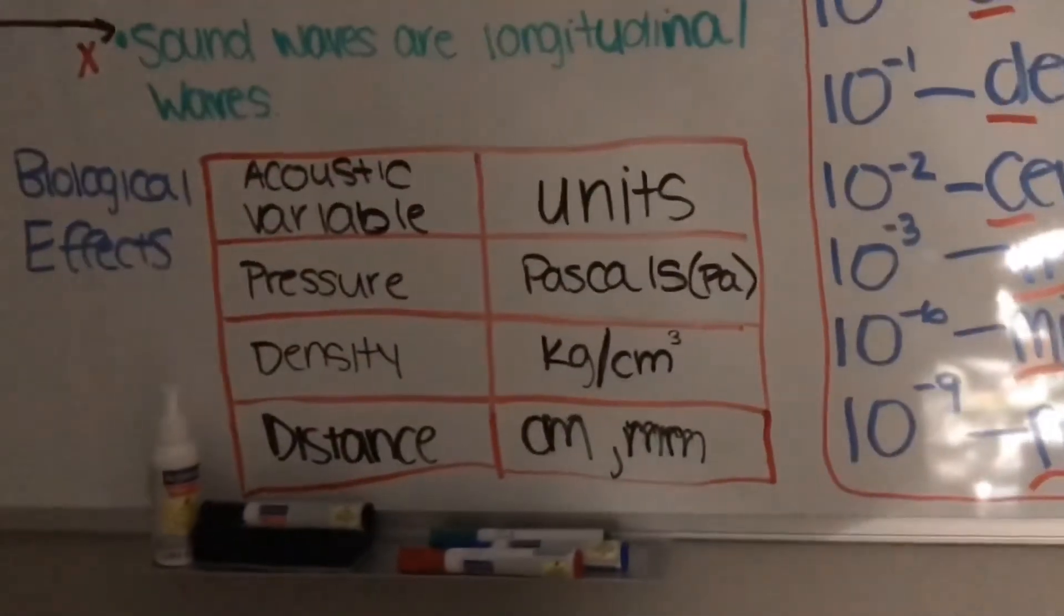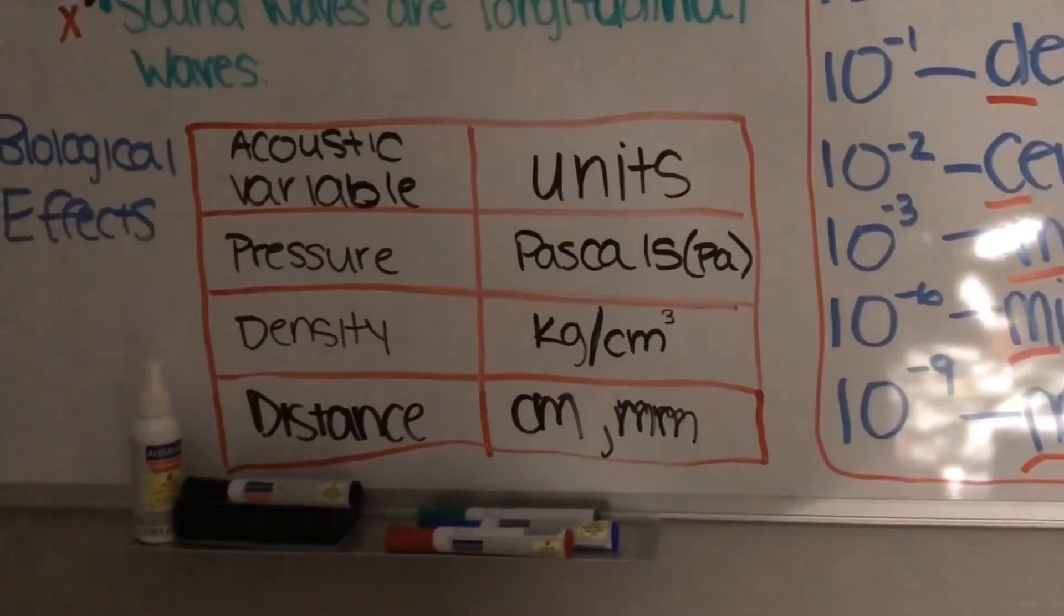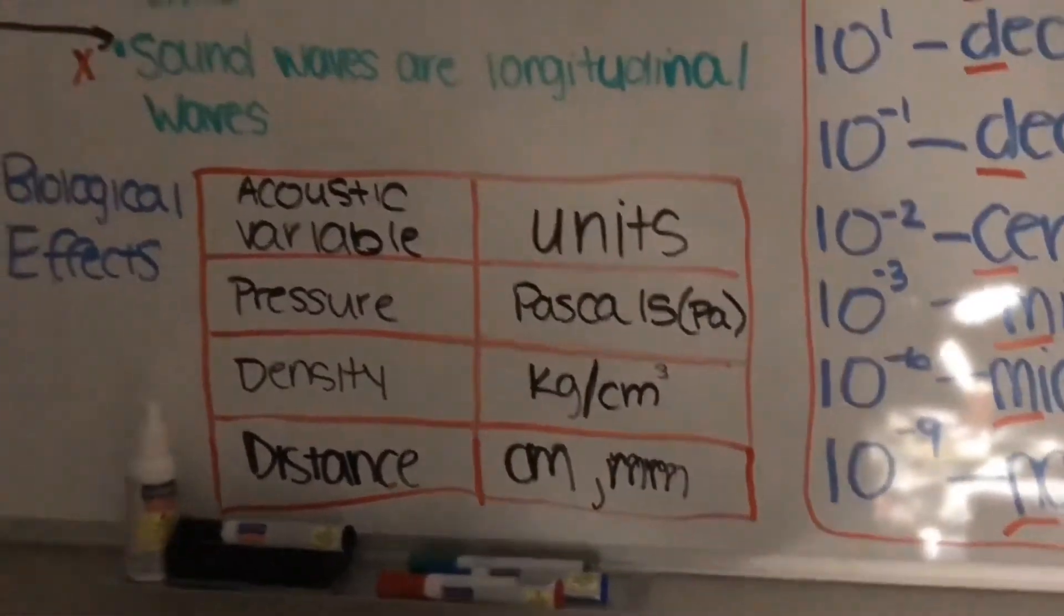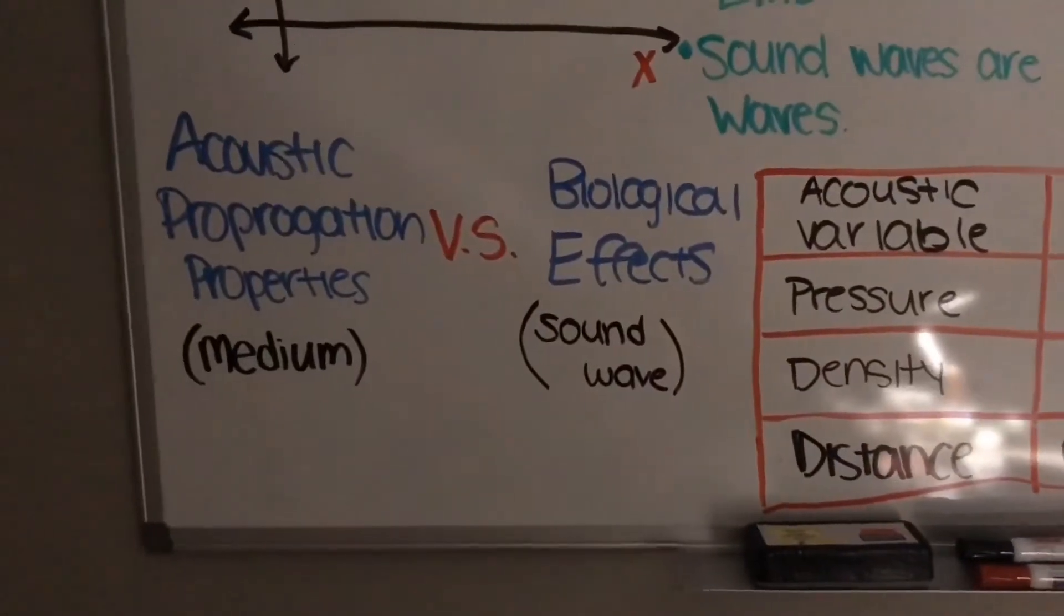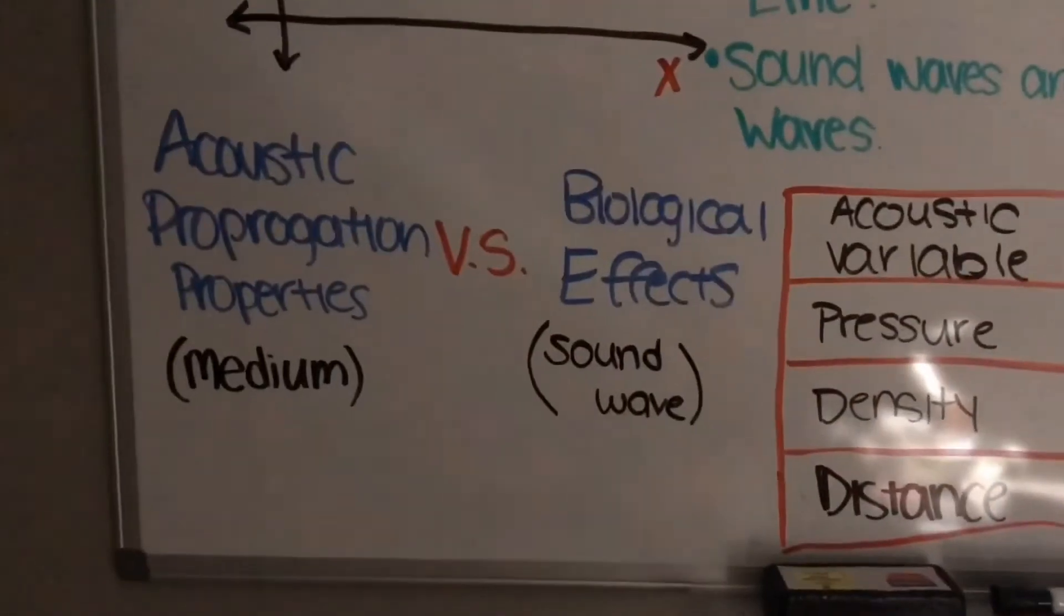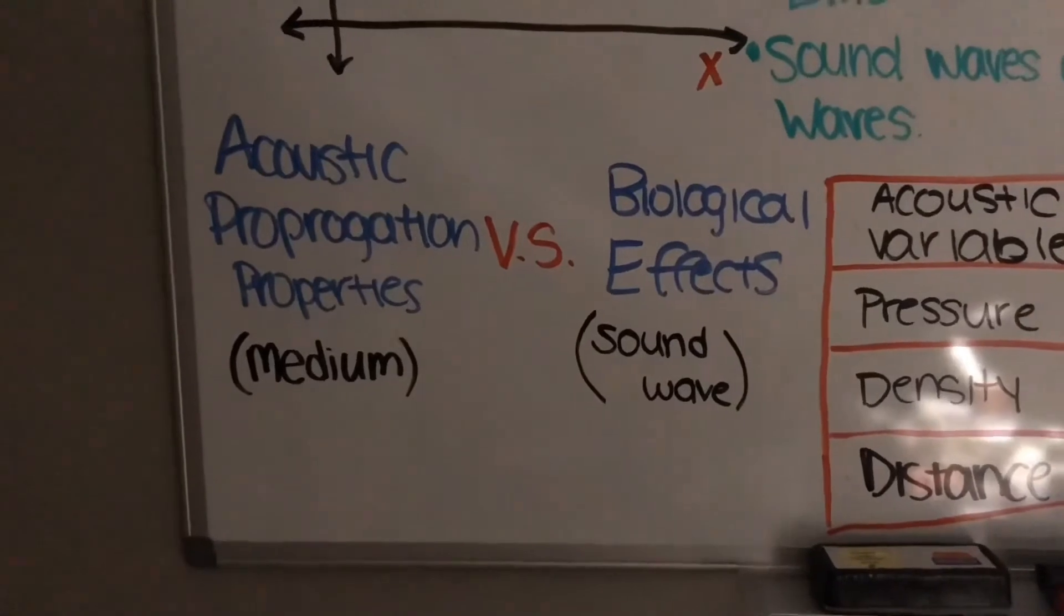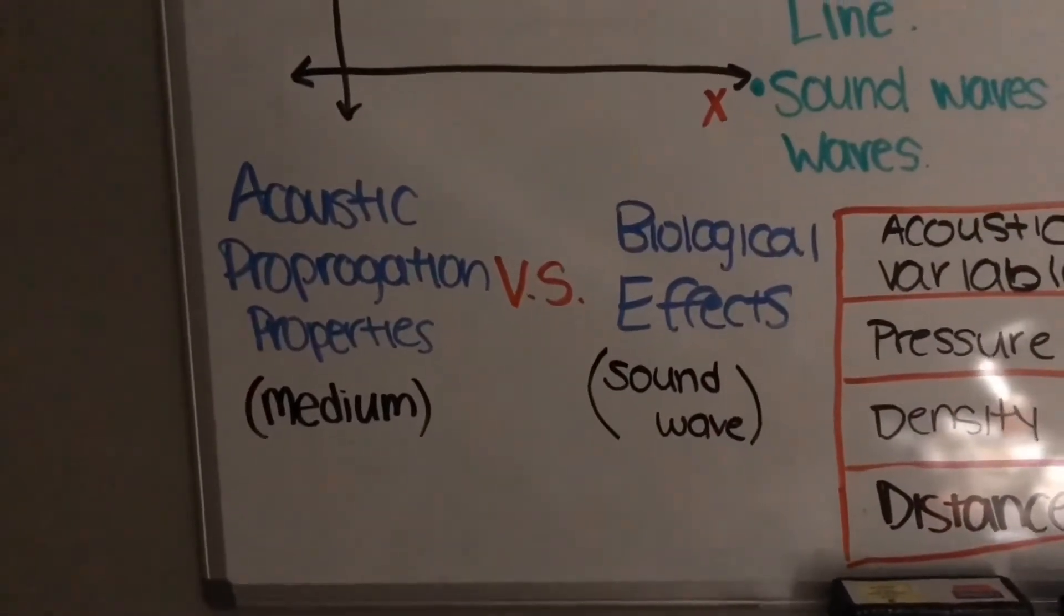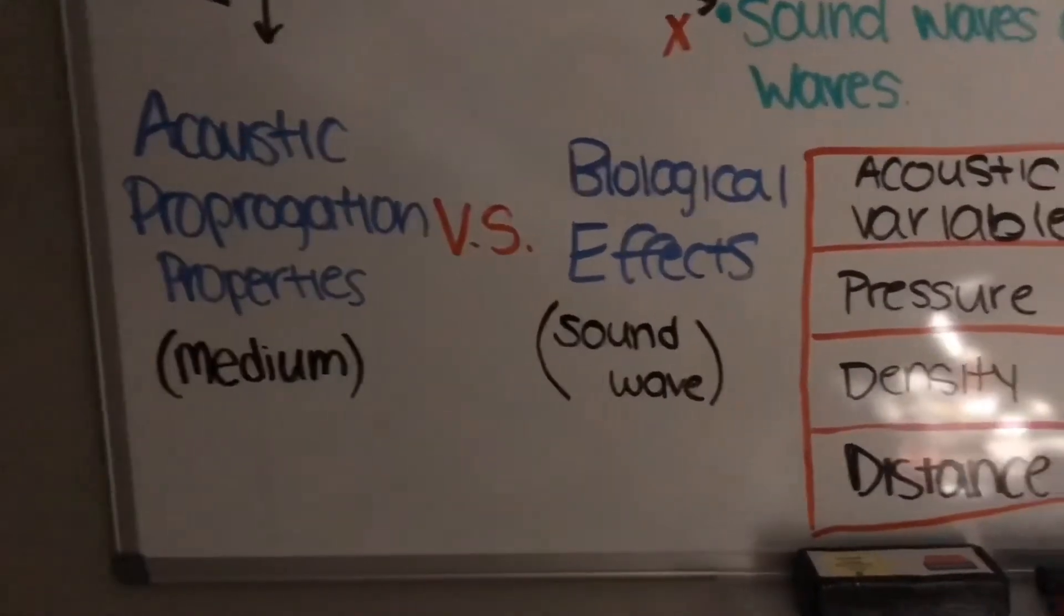Pressure is Pascals, abbreviated PA, density kg over centimeters cubed, and distance could be any form, like centimeters or millimeters. You want to know the difference between acoustic propagation properties versus biological effects. Acoustic propagation properties are the effects of the medium upon the sound wave, and biological effects are the effects of the sound wave upon the biological tissue through which it passes.